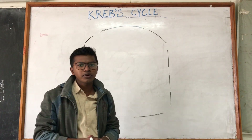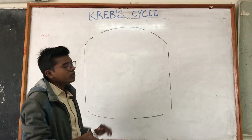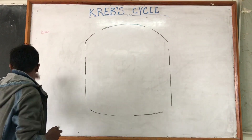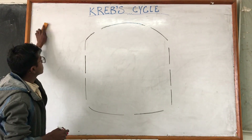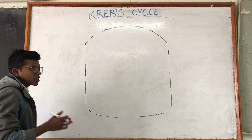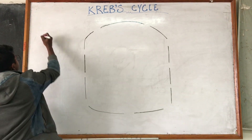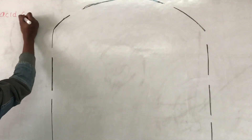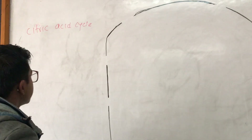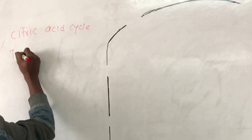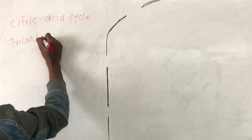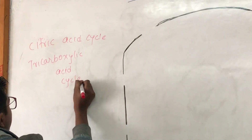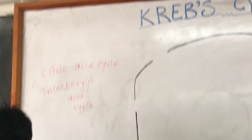Welcome to Akash Tutorial. Today the topic we will be dealing with is the Krebs Cycle. So what is the Krebs Cycle? It is one of the most important pathways for energy production. It is also known as Citric Acid Cycle and it is also known as Tricarboxylic Acid Cycle due to the involvement of three carboxylic acids.